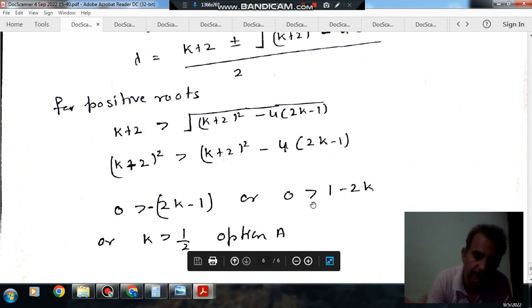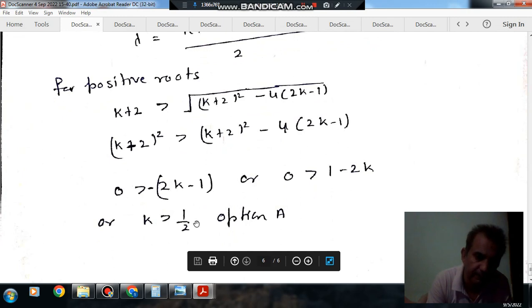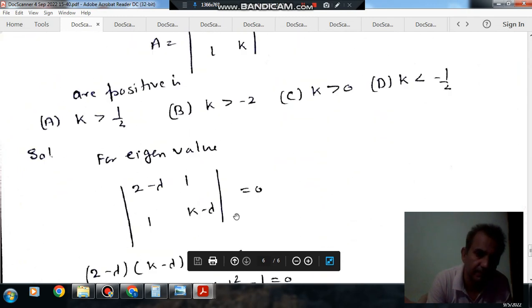From this, we have K > -1/2. So option A is the right answer.